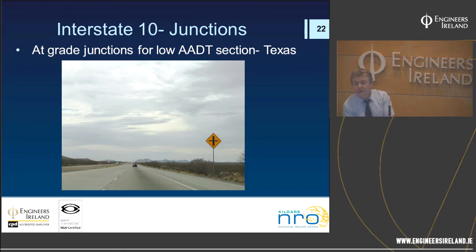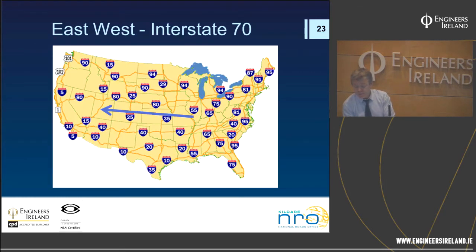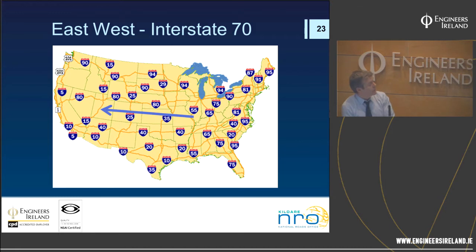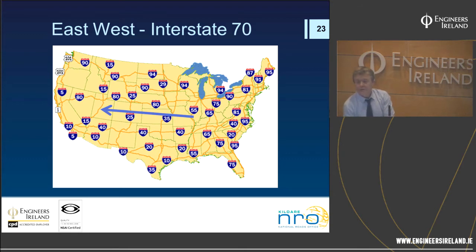Interstate 70 through Colorado is probably the engineering highlight of the interstate system. Along Interstate 70's Keystone route in Colorado and then down onto Interstate 15, you probably have three of the top five engineering highlights of the interstate system — it is the jewel in the crown in terms of interstate engineering.